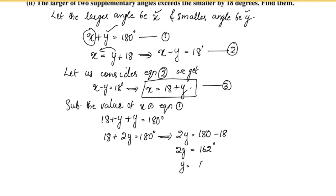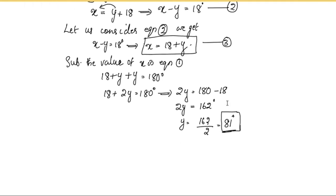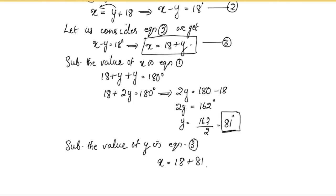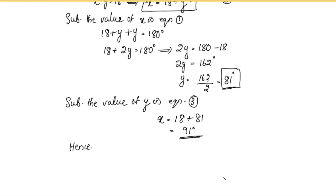2y is equal to 180 minus 18, which is 162 degrees. So 2y equals 162 divided by 2, which equals 81 degrees. Y is equal to 81 degrees. Substituting back, 18 plus 81 equals 99 degrees. Hence the angles are 81 degrees and 99 degrees.